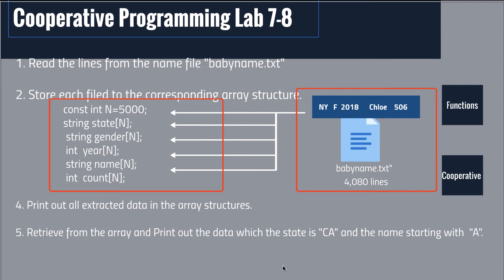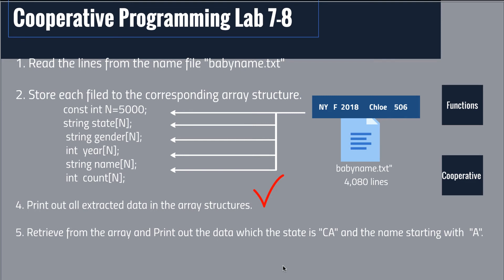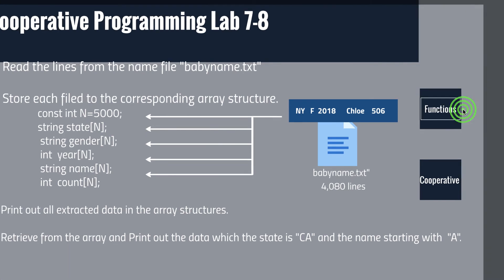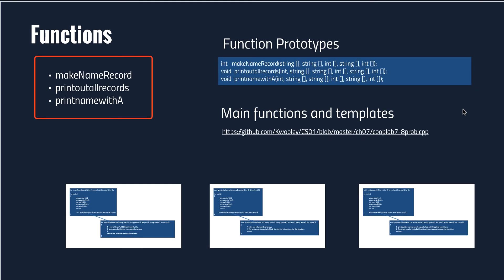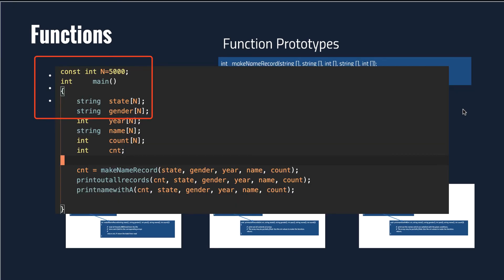We're going to make a function to print out all records from the array. The last function we have to make in this lab is to find records with a given condition — for example, to find records where the state name is California and the name starts with the character A. There are three functions for this programming lab: makeNameRecord to read all lines from the file, a print function to output all array contents, and a find function to locate records matching a condition.